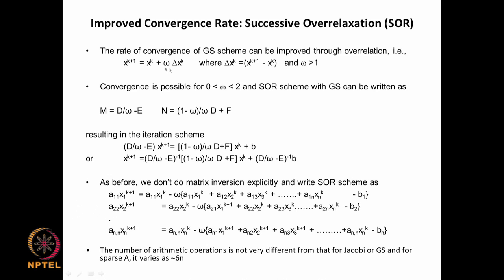Is it possible to increase it by a factor and thereby over-relax? That is the essence of this. Suppose we write x_(k+1) = x_k + omega * delta x_k, where delta x_k is what we get using our conventional scheme. If you put omega equal to 1, then we have no over-relaxation. We are saying x_(k+1) is the previous value plus whatever Jacobi or Gauss-Seidel gives as delta x_k. If omega is greater than 1, then you are over-relaxing at every step, so it becomes a successive over relaxation method.